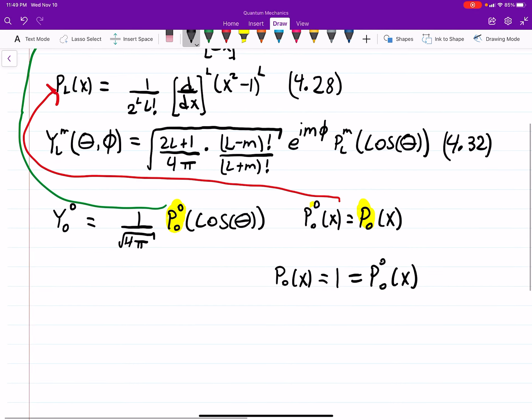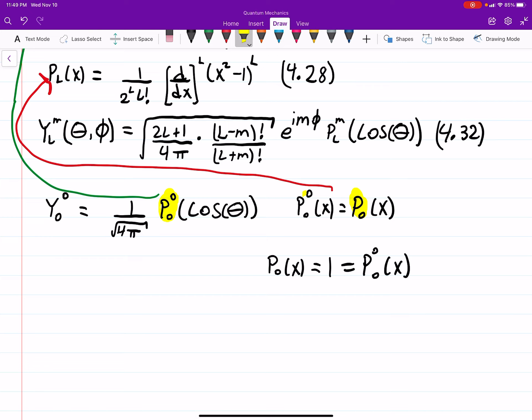So the only difference here is we have cosine instead of x, but we can plug this in. This is equal to 1. So we can actually just plug this right into here, and we can see that this is just going to be 1 over the square root of 4π. So it's almost so easy it's hard in a way.